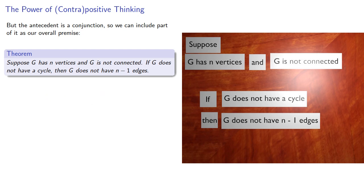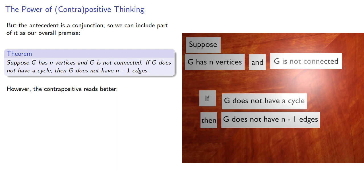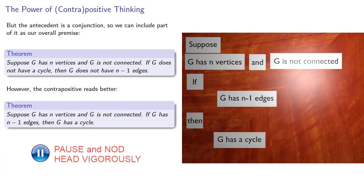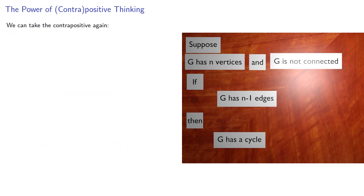However, the contrapositive reads better, so let's swap the antecedent and consequent and negate both. We could go bargain hunting and take the contrapositive again.